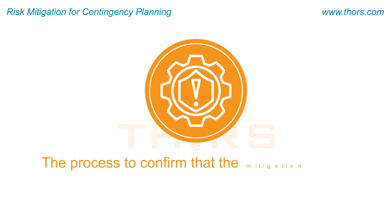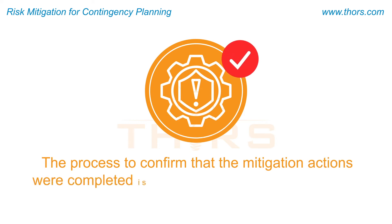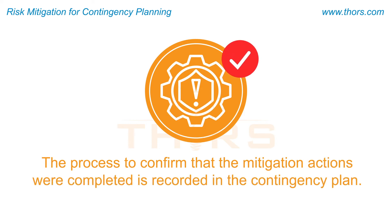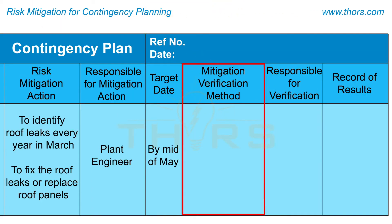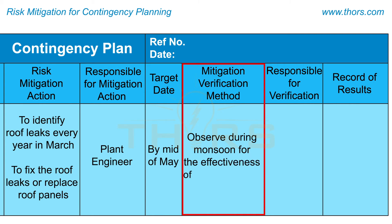Next, the process to confirm that the mitigation actions were completed is recorded in the contingency plan. For the leaking roof example, the verification method is entered as: observe during monsoon for the effectiveness of implementation, in the mitigation verification method column.